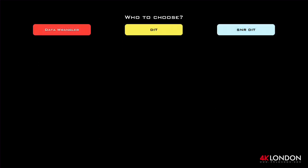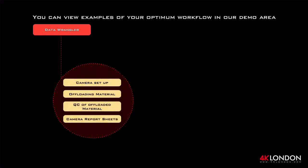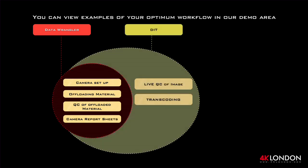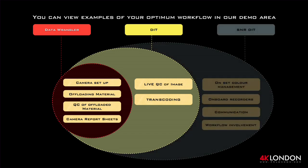When booking a technician for your production, which person is right for your job? A Data Wrangler's primary duties include setting up the camera and making sure the frame rates, reel names, type of codec, etc. are correct and consistent. They will offload your material, create multiple backups, check footage for errors, and mark all information down on the camera report sheets. A DIT will have the skill set to identify any camera errors by viewing a live feed from the camera on set — this could be image flickering or artifacts that may not be noticeable to the untrained eye. As well as securely offloading the material, cueing the footage, and filling out camera report sheets, the DIT can deliver transcoded material in the desired format.